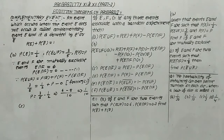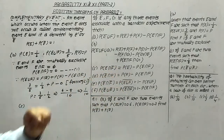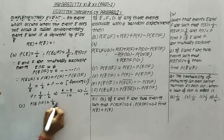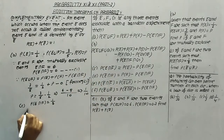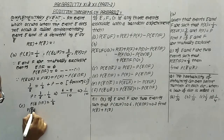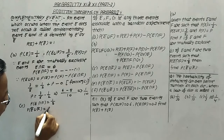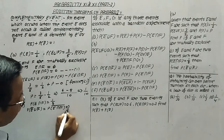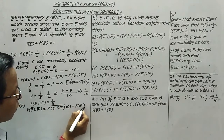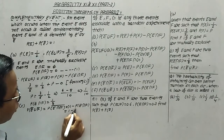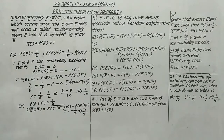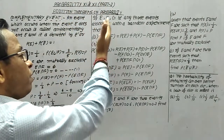For part C, if E and F are two events such that the probability of E intersection F equals 1/8, find the probability of E dash union F dash. The probability of E dash union F dash equals the probability of E intersection F, whole dash, which equals 1 minus the probability of E intersection F. So the answer is 1 - 1/8 = 7/8.